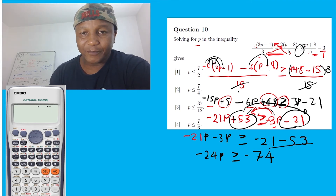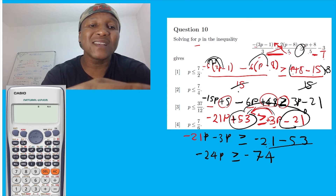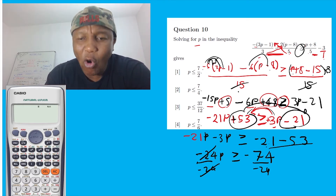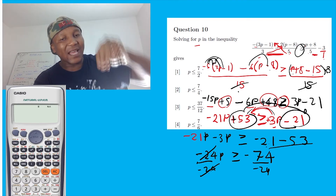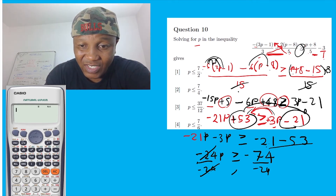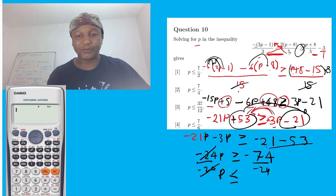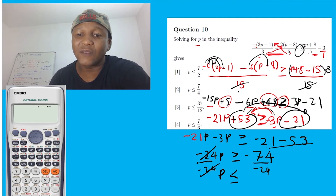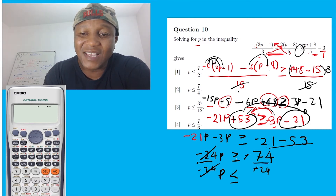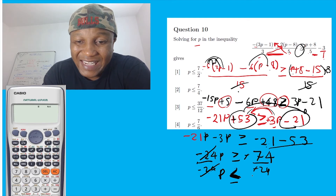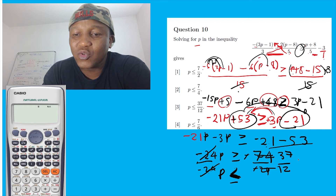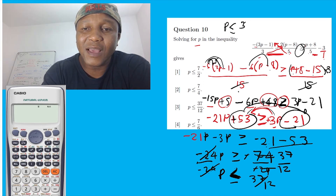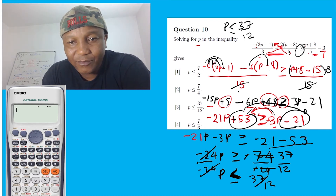So if you want to get the value of P, I must divide by negative 24 throughout — divide by negative 24, and divide by negative 24. This is very, very important. Because we divided by negative — only if you divide by negative — this is going to change the direction. So P is less or equal to negative 74 divided by 24. Negative 74 divided by 24. Negative divided by negative is positive. But the direction is changing because you divide by negative. By 2 it's going to be 37; if you divide by 2 it's going to be 12. So it's going to be 37 over 12. P is less or equal to 37 over 12. And if you look here, it's going to be option number 3.